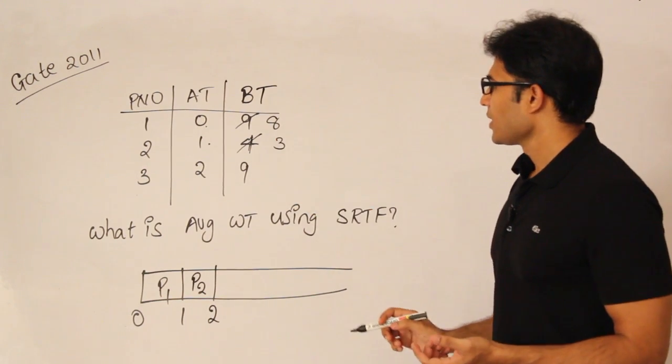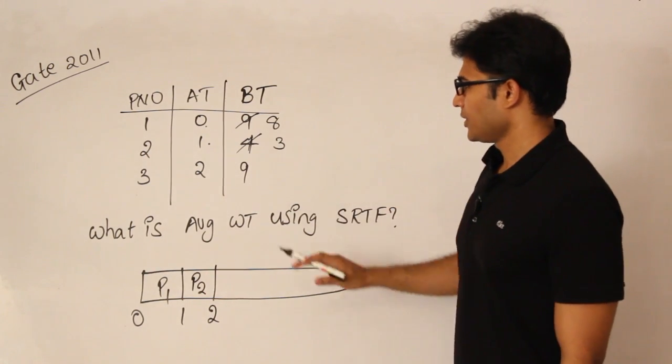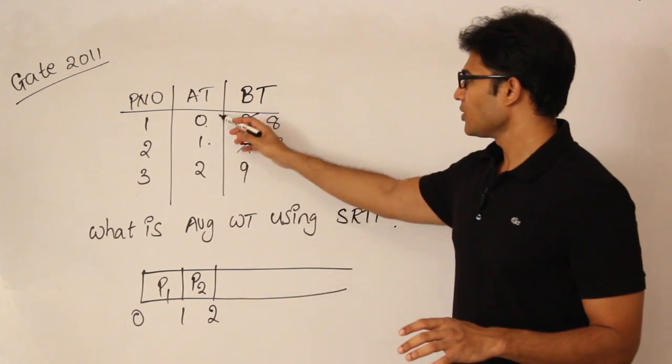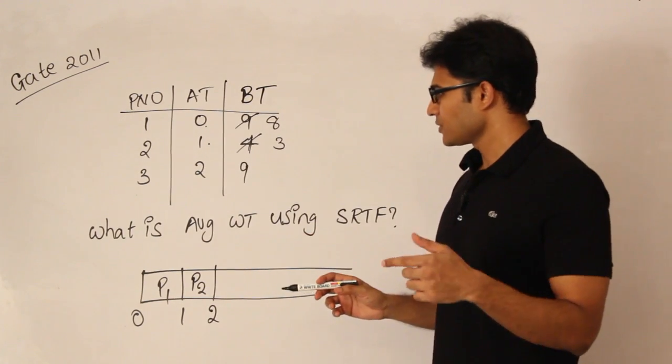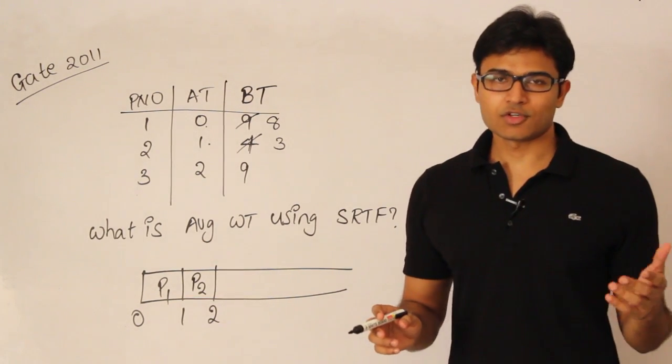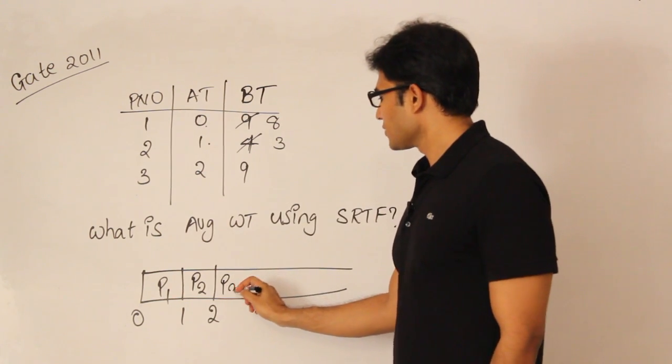Now after this we have all 3 processes available. By time 2, all the processes are available. Once every process becomes available, it will just be like Shortest Job First. So among them, which one is the shortest? P2. So it continues.